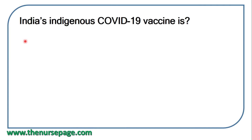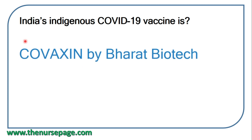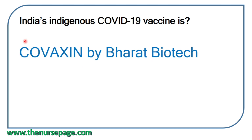Next question: India's indigenous COVID-19 vaccine is Covaxin, manufactured by Bharat Biotech.